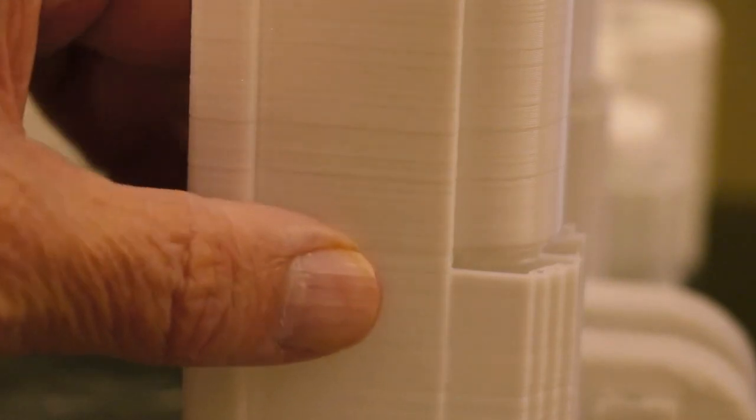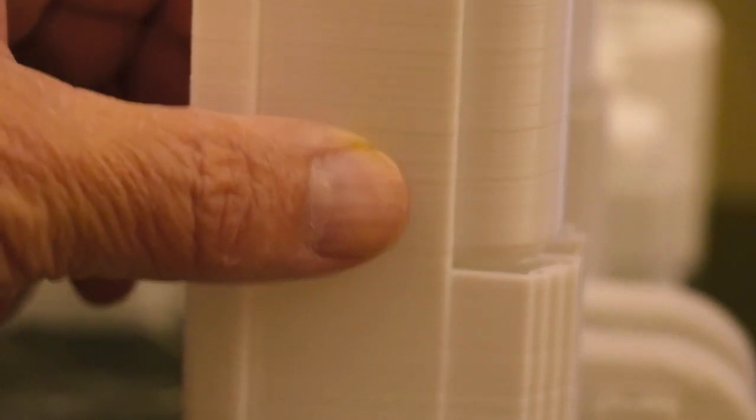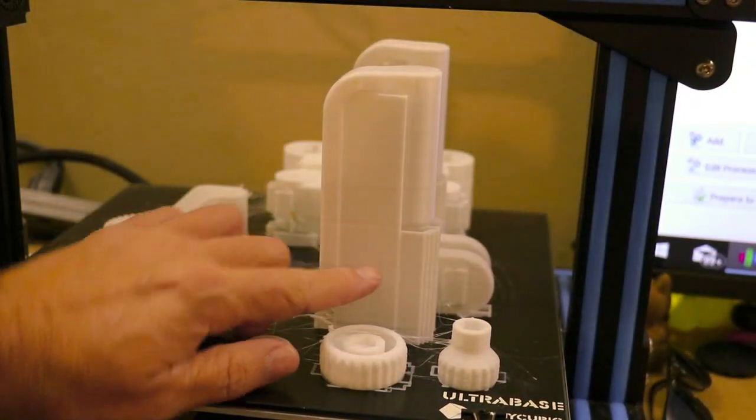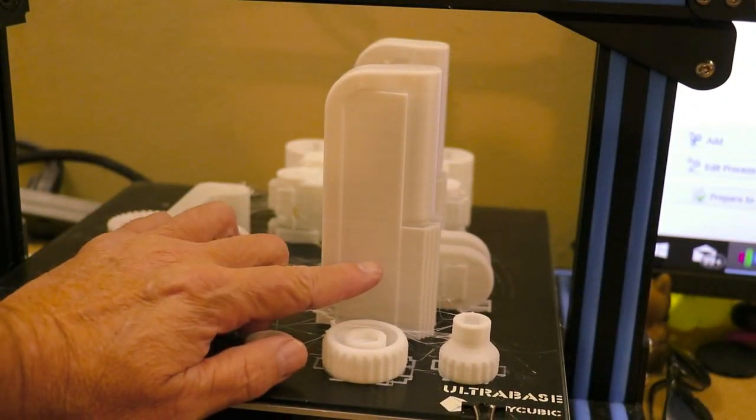Other than that it seems to have fed really well. If you take a look, a couple lines here, not really a layer shift, but there's a problem with feeding right there, probably when I was in bed. So let's take all this off and you can see this compared to some of the other pieces already printed here using a 0.4 millimeter nozzle.